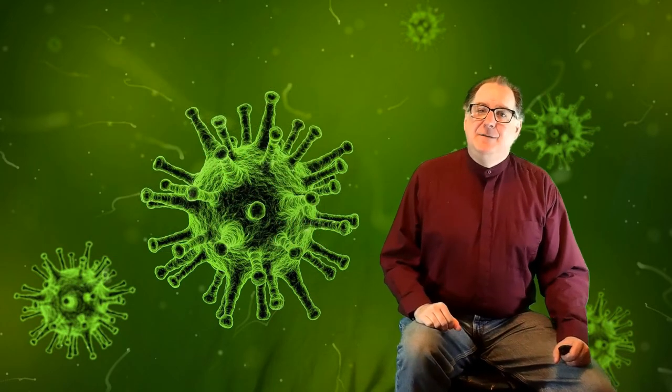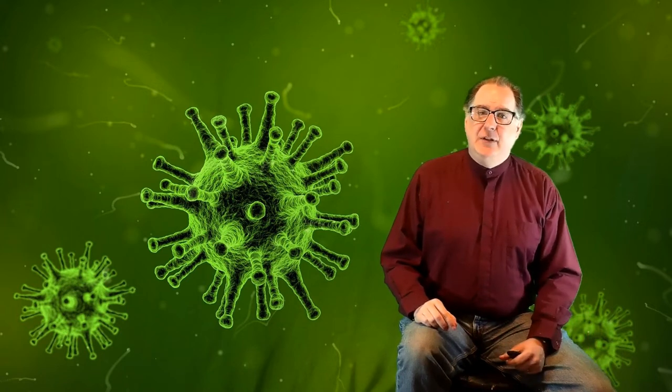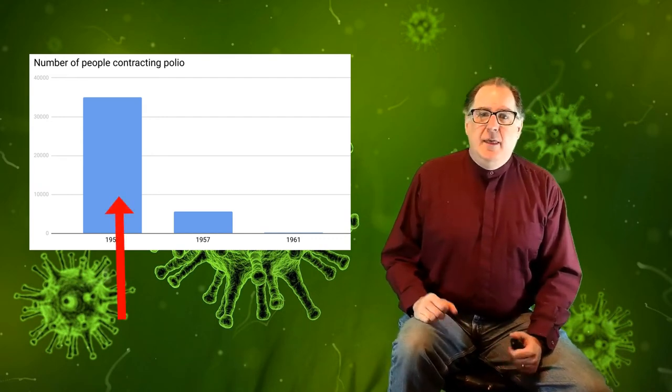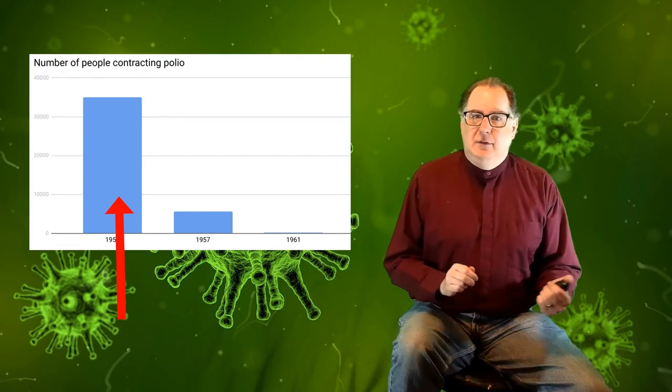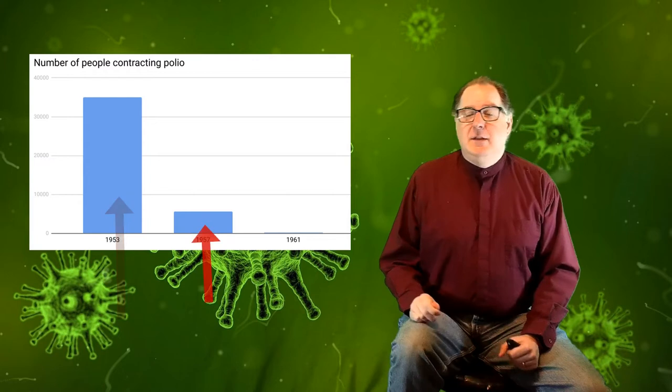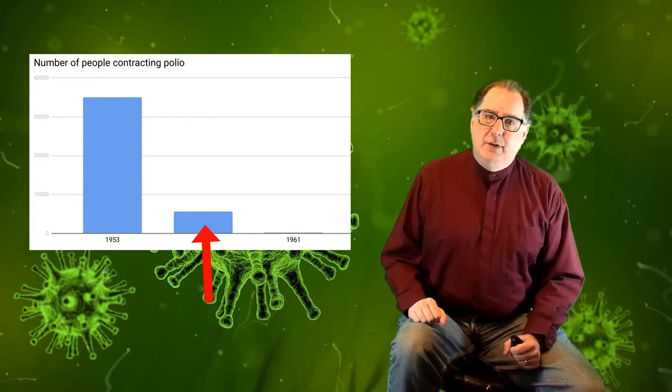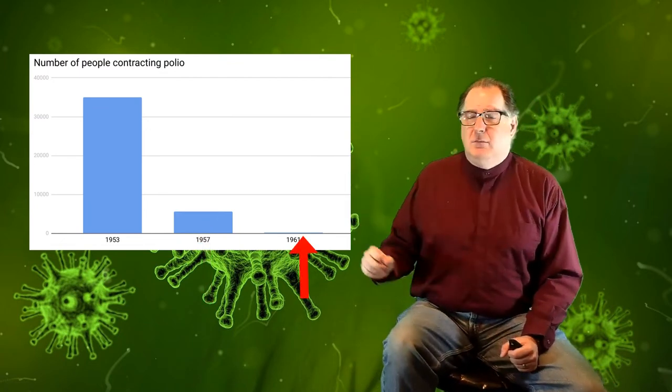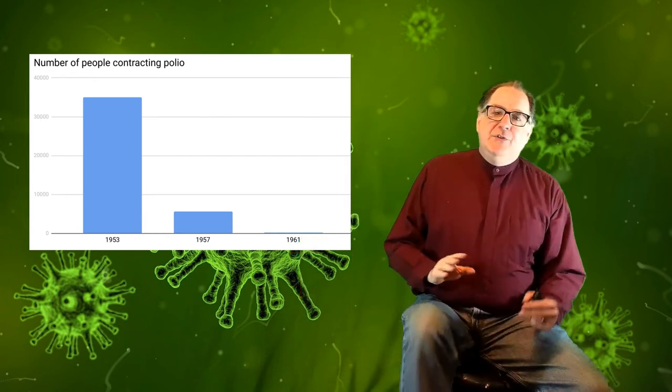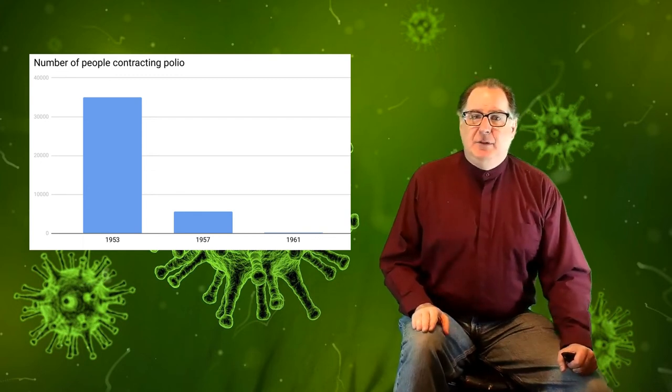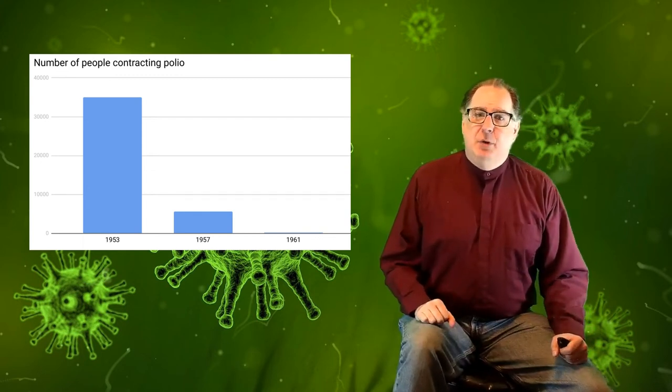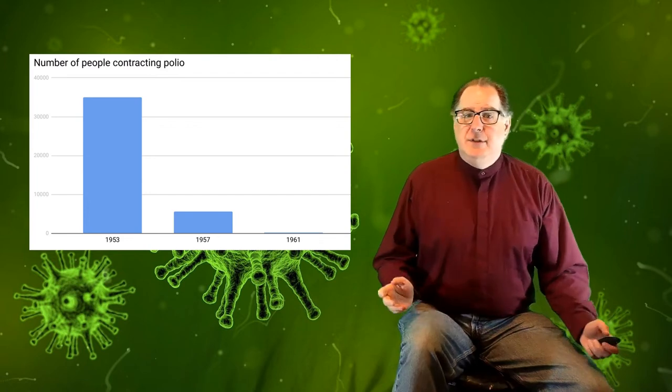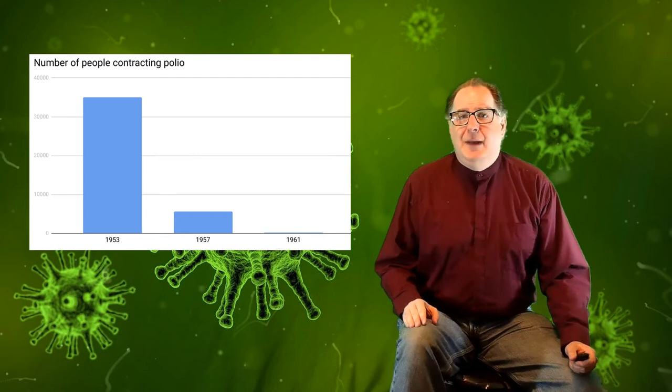In 1955, Jonas Salk developed a vaccine for polio. Look at this graph. In 1953, there were 35,000 cases in the United States. In 1957, that had dropped to 5,600. In 1961, only 161. You can barely see the line. Six years after the vaccine was developed, the rate at which people contracted polio was 0.46 percent of where it was before. Today, polio is so rare in the U.S. that we don't think about it at all.